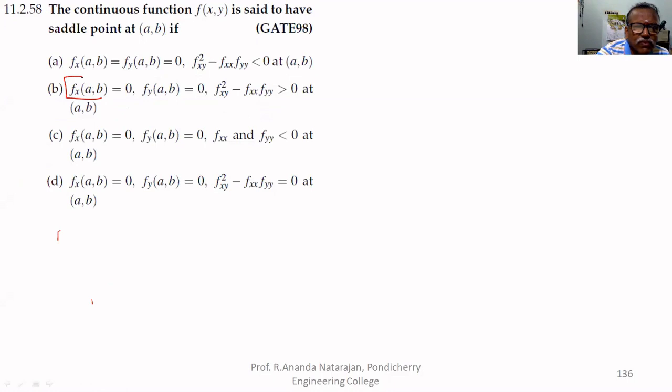f_x(a,b) - we have to substitute that point. This means it is differentiated partially with respect to x. f_y means it is partially differentiated with respect to y. At that point it must be zero. The derivative zero means the slope is zero.